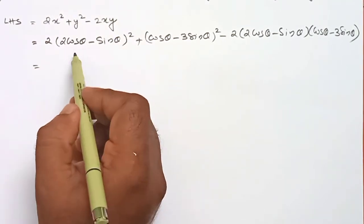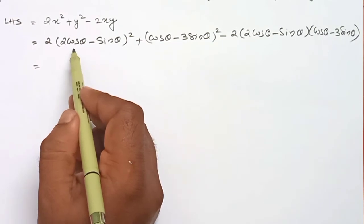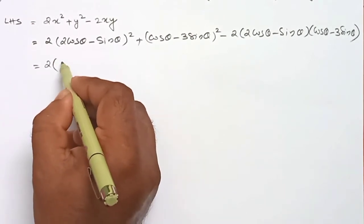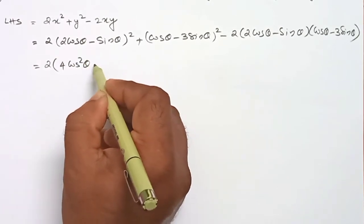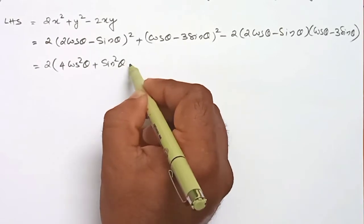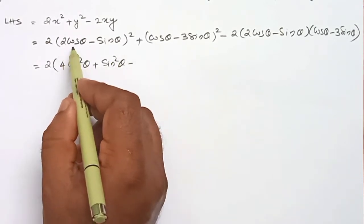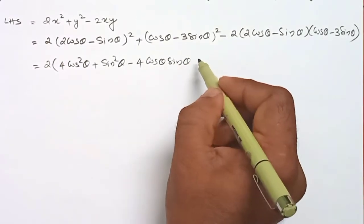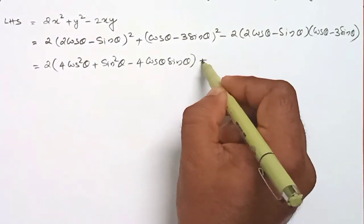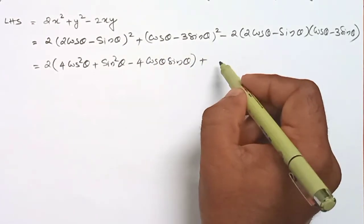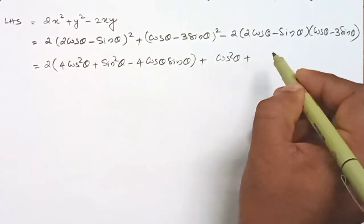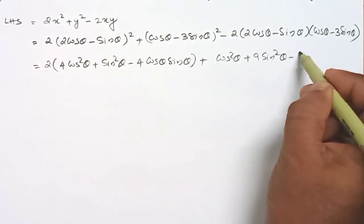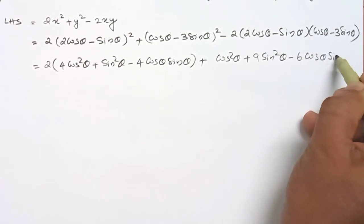x² is equal to (a - b) whole square = a² + b² - 2ab. That is 2 into (4cos²θ + sin²θ - 4cosθ sinθ), plus (cosθ - 3sinθ)² which equals cos²θ + 9sin²θ - 6cosθ sinθ.